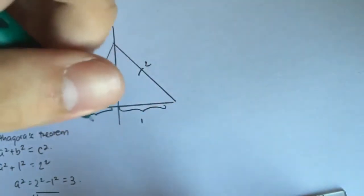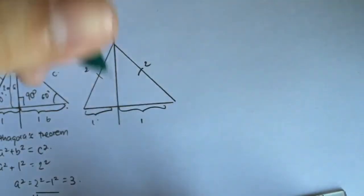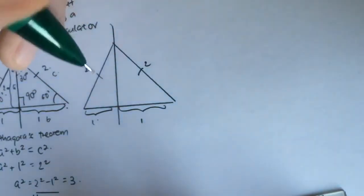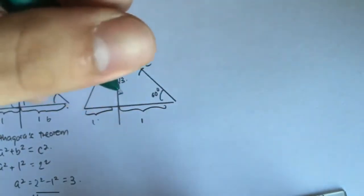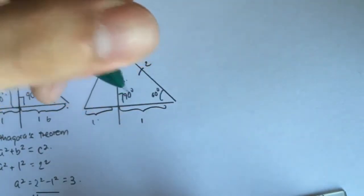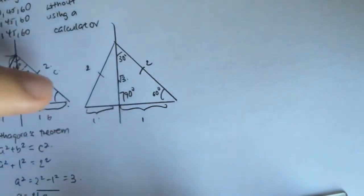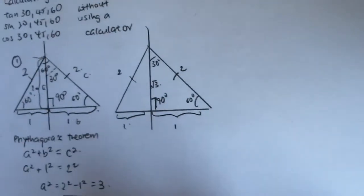We know that the length of the perpendicular bisector is square root 3. This angle is 60 degrees, this is 90 degrees because it's a perpendicular bisector, and this is 30 degrees. Now we have all the values, and we'll be able to solve tangent 30 and 60, sine 30 and 60, and cosine 30 and 60.